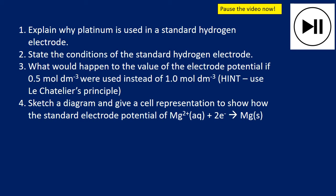Question two: state the conditions of the standard hydrogen electrode. The conditions are: 298 Kelvin, hydrogen gas at 100 kilopascals, and the H⁺ ion concentration must be equal to 1 mol per decimetre cubed. Don't say 'one mole of acid' — that's a very common mistake.